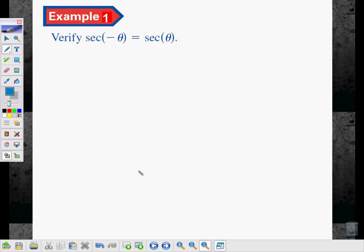For our first example we will be given this verification that the secant of negative theta is equal to the secant of theta. Verification is where we show one side of an equation is equal to the other side. Thus it is imperative that we choose a single side of the equation to work on. We do not work on both sides of the equation simultaneously.